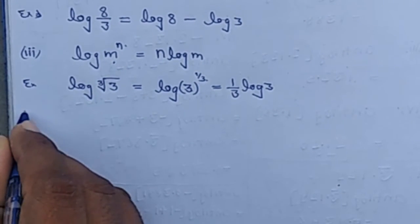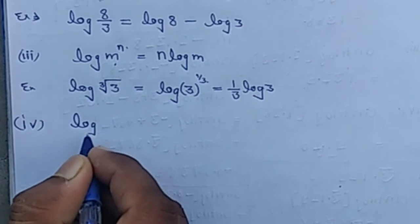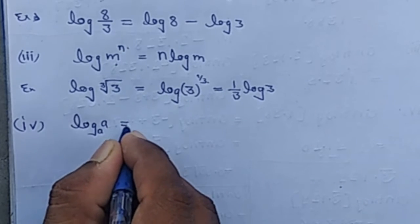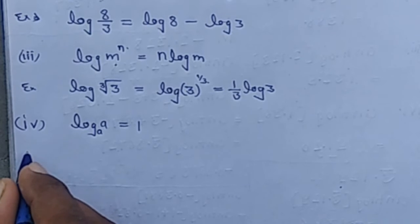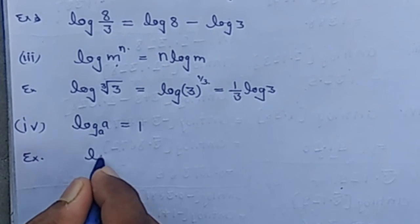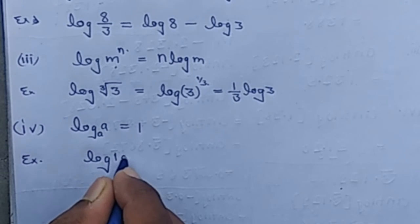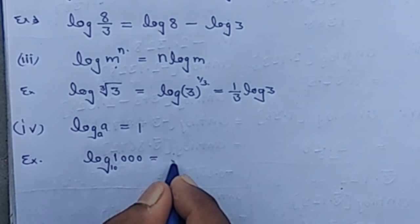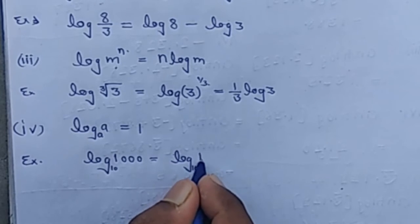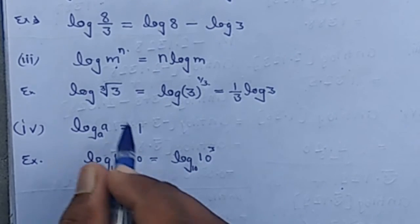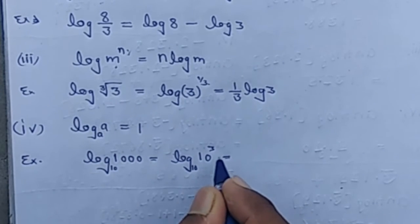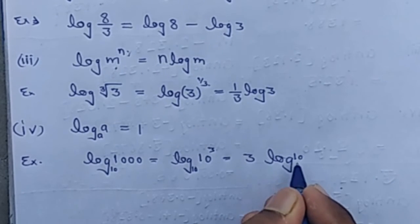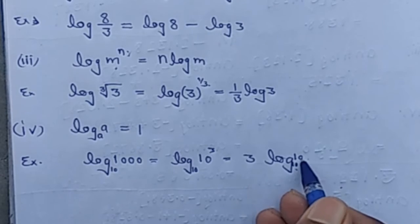For example, log 1000. Since the base is 10, 1000 can be written as 10^3. We know that log(m^n) = n log m. Since log_a(a) = 1, it is 3 × 1 = 3.